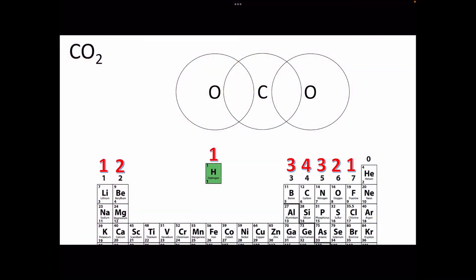In this video, we're going to learn how to draw a dot and cross diagram for carbon dioxide. A carbon dioxide molecule is made up of one carbon atom and two oxygen atoms. When you draw the atoms, you draw circles overlapping with a space to draw the shared electrons.